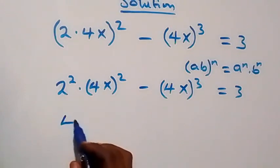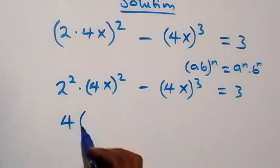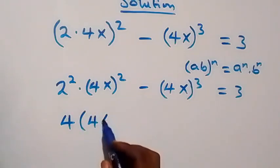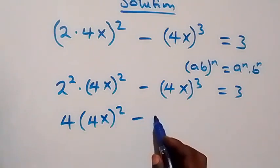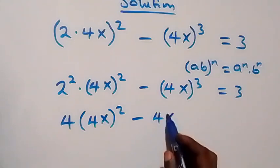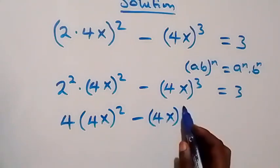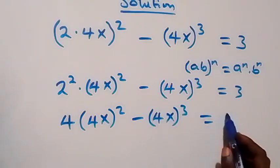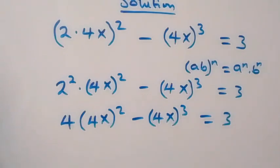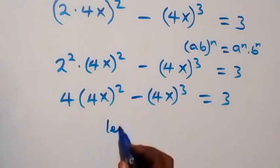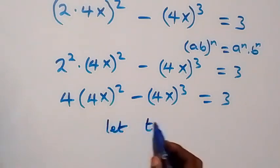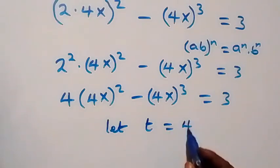So 2 squared is 4, giving us 4 times (4x) squared, minus (4x) raised to power 3, equals 3. Now we have 4x appearing repeatedly, so let's use a substitution letter. Let t equal 4x.